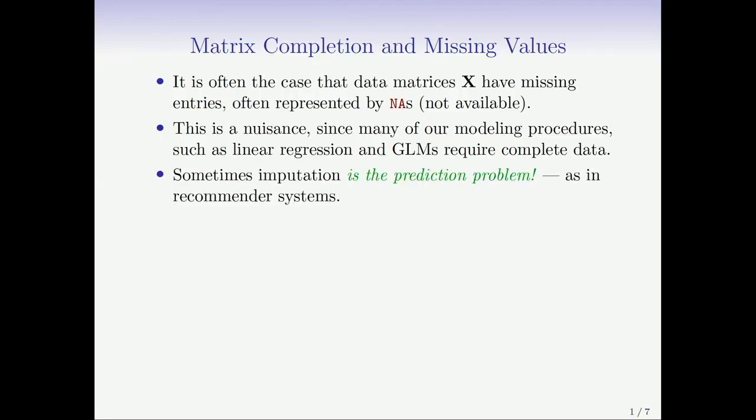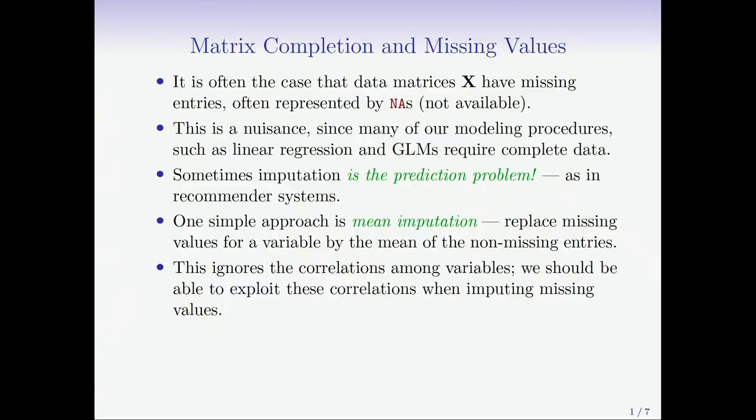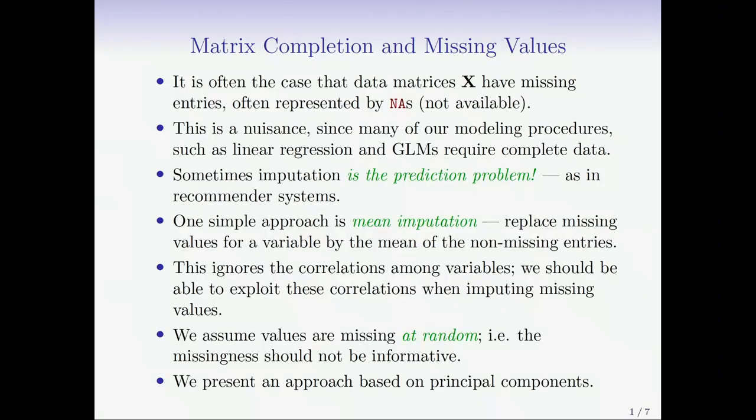However, sometimes imputation is the prediction problem, and we're going to see that in the next example in recommender systems. One simple approach when you've got missing data is mean imputation. You replace the missing entries for a variable by the mean of the non-missing entries. However, this ignores the correlations amongst the variables. We should be able to exploit the correlations when imputing missing values. We also need to assume that the missing values are missing at random, i.e. the missingness should not be informative.